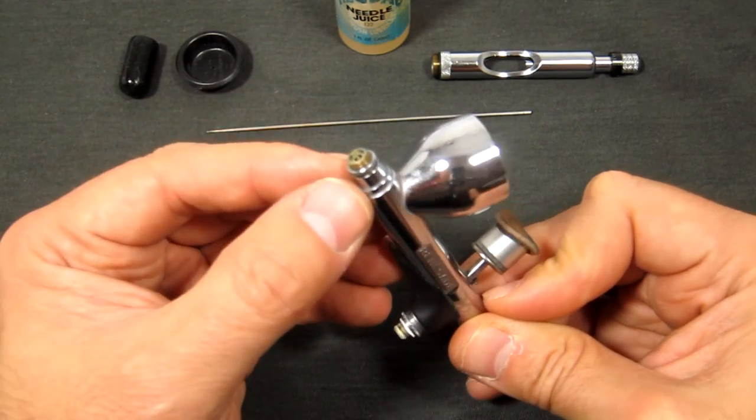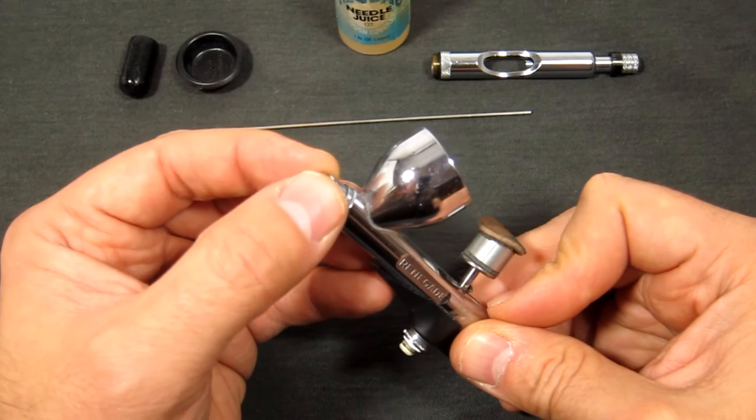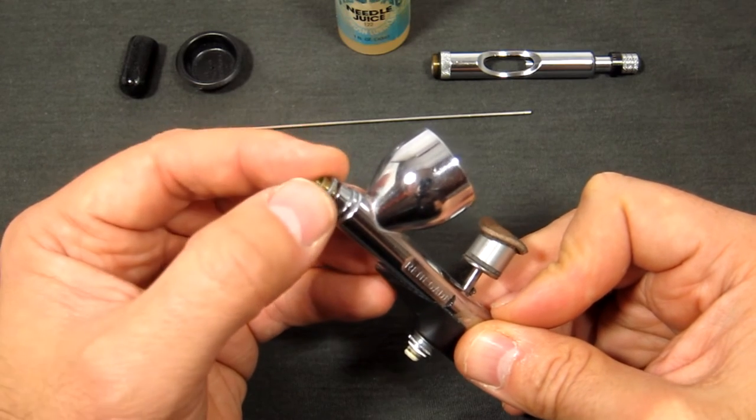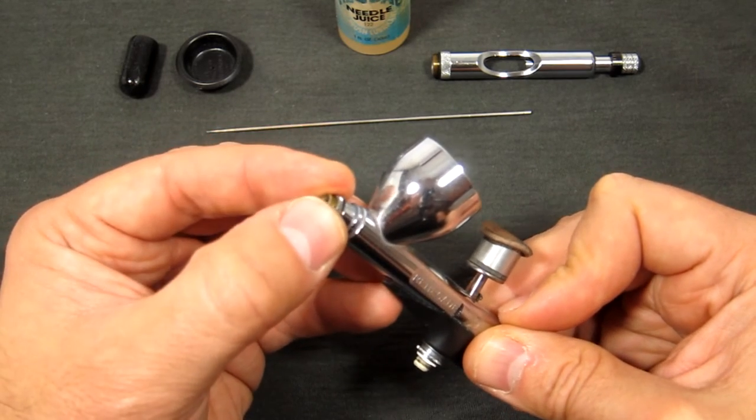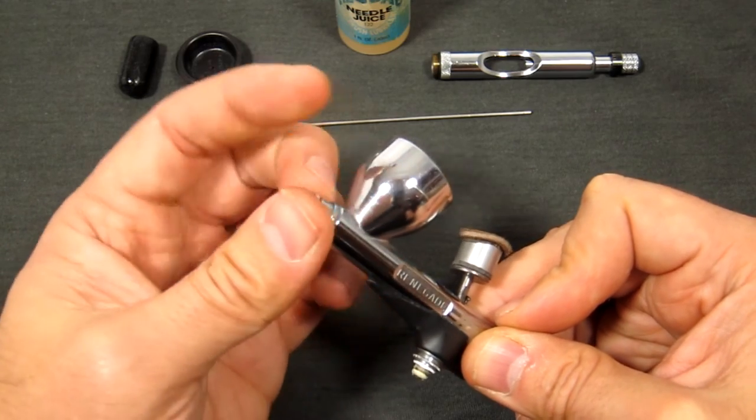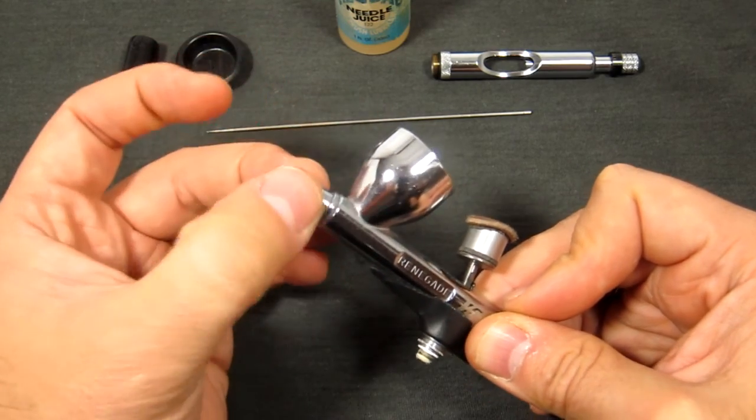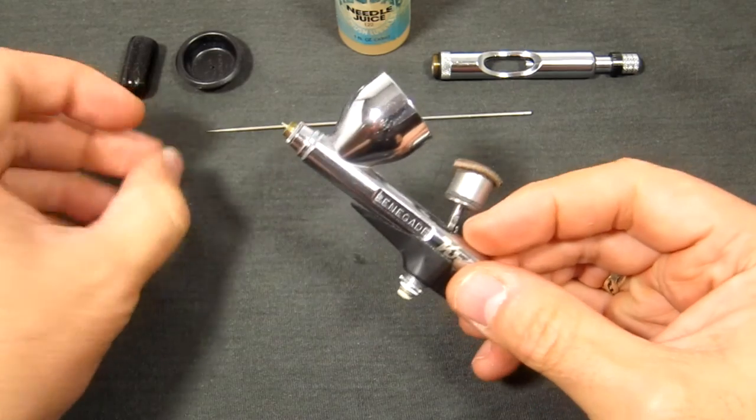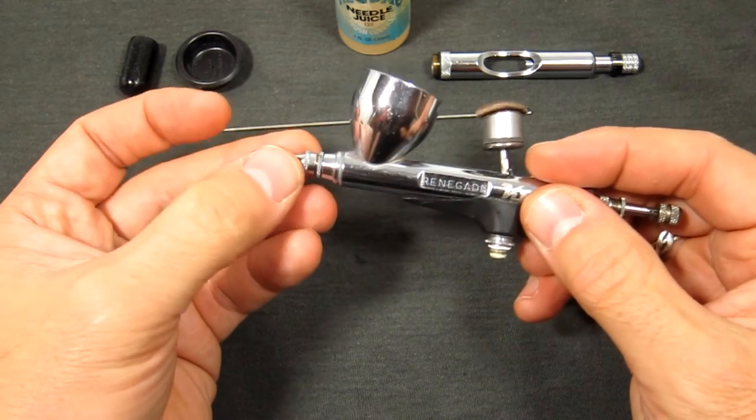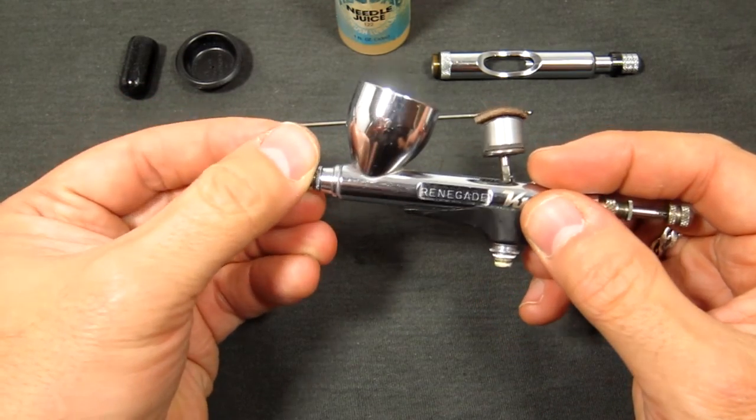Now remember the threads on these nozzle pieces are very, very fine—so if you're not sure that you're not cross-threading it, you can turn it anti-clockwise or counterclockwise until you feel a click, and then you can start turning it clockwise or to the right. Righty-tighty, lefty-loosey, remember.